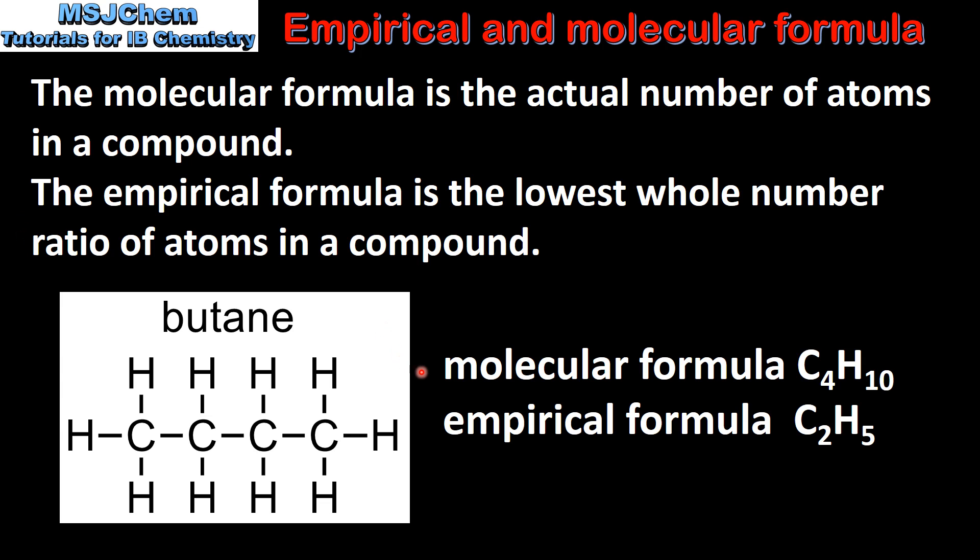Let's look at an example. The molecular formula for butane is C4H10. This is the actual number of atoms in the compound. There are 4 carbon atoms and 10 hydrogen atoms.